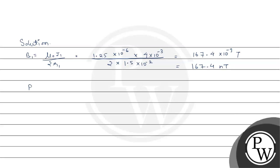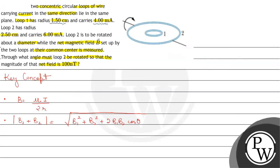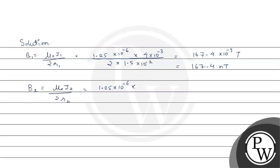Now similarly we can find B2. So B2 will be mu naught into i2 upon 2 r2. It will be equal to 1.25 into 10 to the power minus 6 into what is i2? i2 is given to us as 6 milliampere. So it will be 6 into 10 to the power minus 3 over 2 into what is r2? r2 is given to us as 2.5 centimeters. So it will be 2.5 into 10 to the power minus 2 and solving this what do we get? We get 150.72 nanotesla.